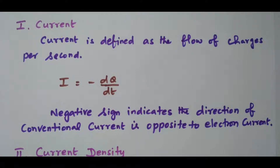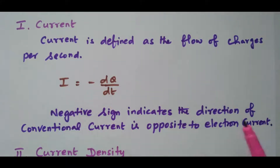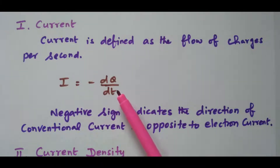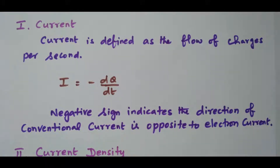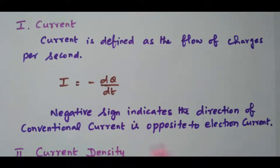First, we will see the current. The current is defined as flow of charges per second. That is I equal to minus dQ by dt — the rate of flow of charge per unit second. This negative sign indicates that the direction of conventional current is opposite to the electron current.